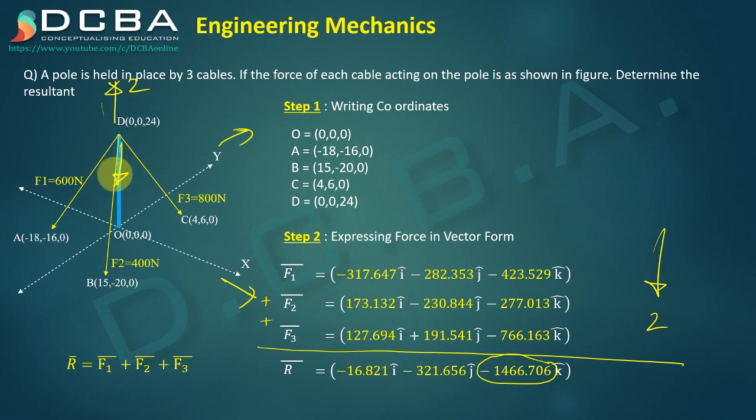If this is x axis, this is y axis, this obviously has to be the z axis. And negative indicates that there is a downward force of 1466.706. There has to be a downward force otherwise this pole will not be able to stand right. These cables are actually pulling that pole downwards. Then negative 16.821 indicates that these cables are slightly tilting this pole towards the negative x axis.